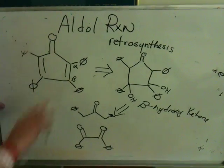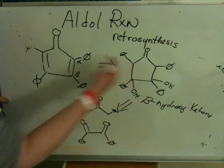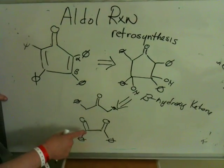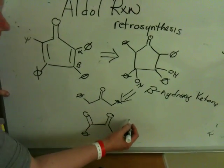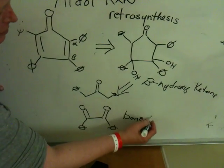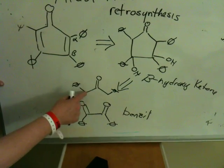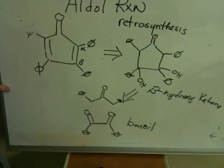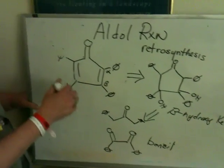There are many, many versions of the Aldol. So look at this — from this I can make this. How do I make this? This is benzil — that nice yellow compound you made. I use benzil with diphenylpropanone, 1,3-diphenylpropanone. So if I take those reagents and I put them in base, I'll get that, and that'll just spontaneously form this.